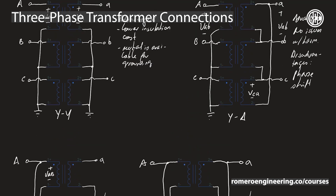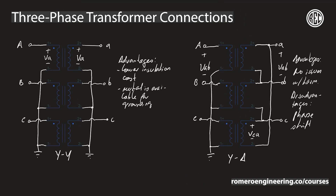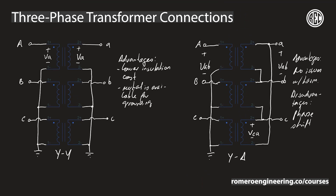Those are the four different combinations for a two-winding three-phase transformer: a YY connection, a Y-delta connection, a delta-Y connection, or a delta-delta connection. Each one has its advantages and disadvantages with respect to the others.